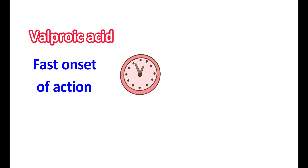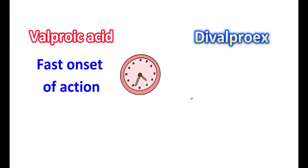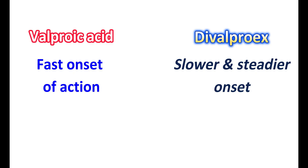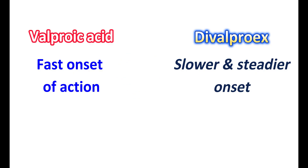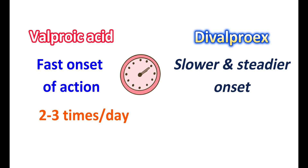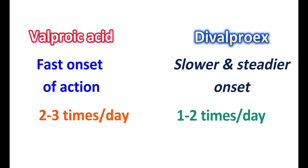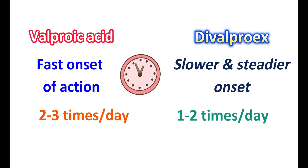Onset of action: Valproic acid has a fast onset of action, whereas divalproex has a slower and steadier onset of action. Because of its short duration, valproic acid is given around two to three times per day, whereas divalproex is given only one to two times per day.